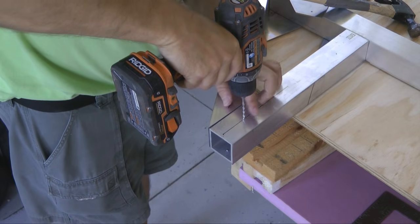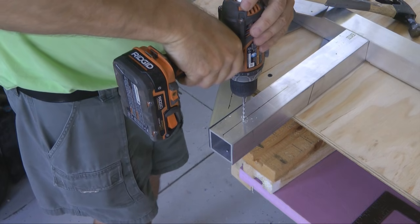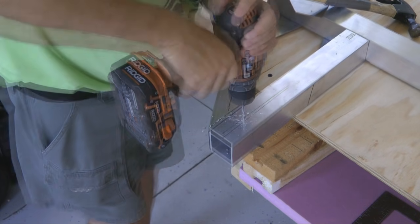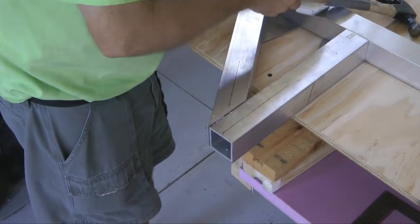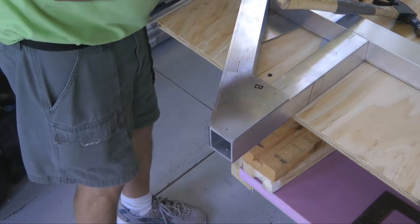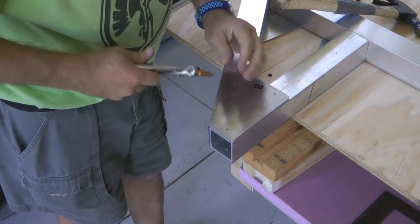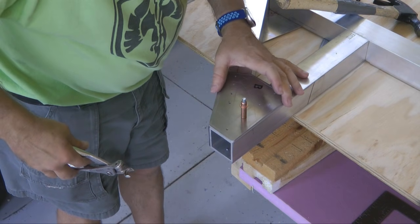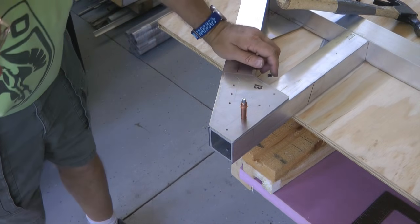I'm using a number 30 drill bit here. Always drill as straight as you can, double checking your work. Now, I can click all this in place just to make sure my other holes are still aligned.